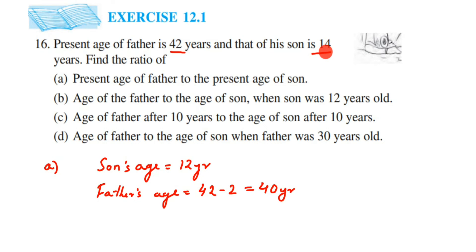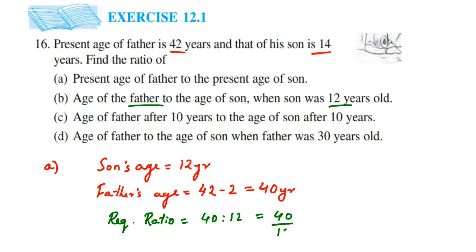Now we find the ratio. The required ratio will be equal to father's age 40 is to son's age 12. So 40 is to 12. Converting to a fraction: 40 upon 12. Cancel in 2 table — 2 sixes are 12, 2 twenties are 40 — then cancel again: 2 threes are 6, 2 tens are 20. So we get 10 upon 3. The ratio will become 10 is to 3.